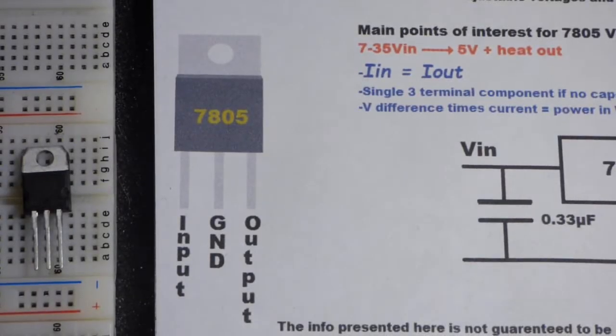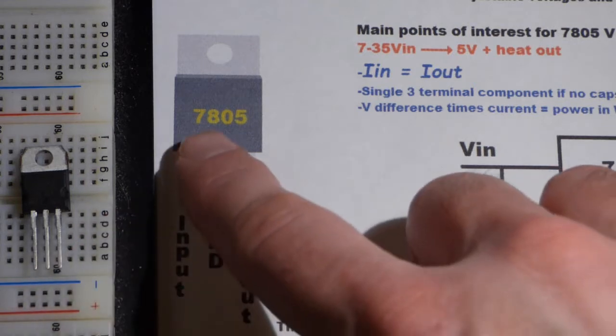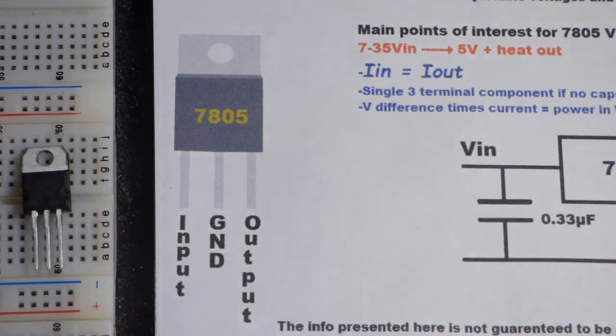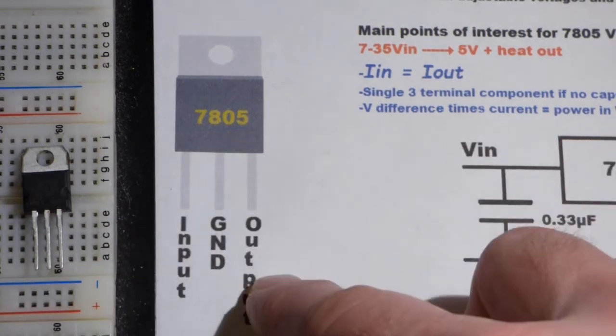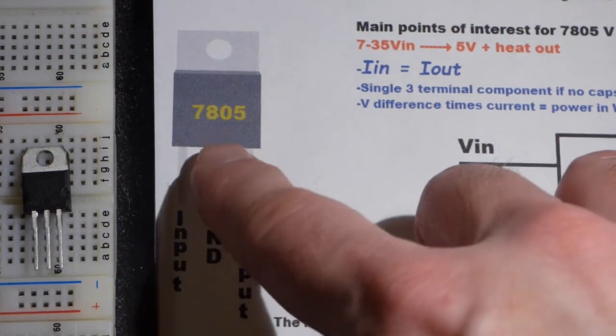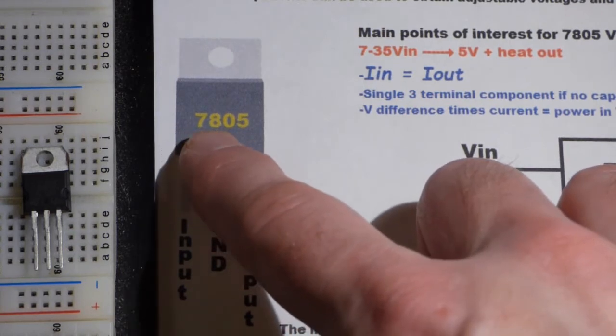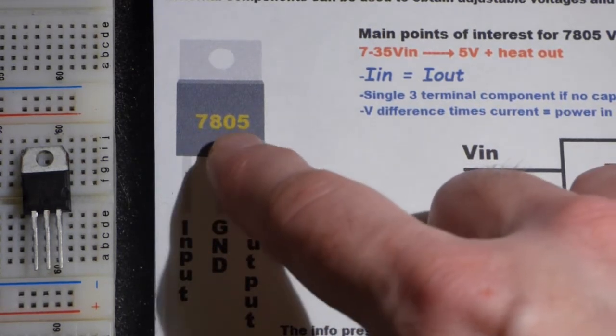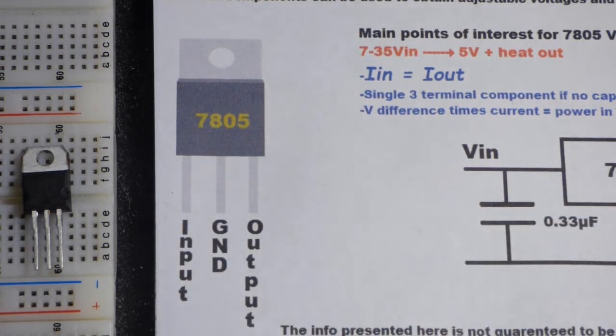So now in today's video we're going to look at an interesting component. I got a few of these, they're L7805CV. The part number doesn't show up very good on camera, but it's a 7805CV positive linear voltage regulator. There's also a 79 series for negative voltages. This is a 78 series 5 volts - that's what the 05 means.